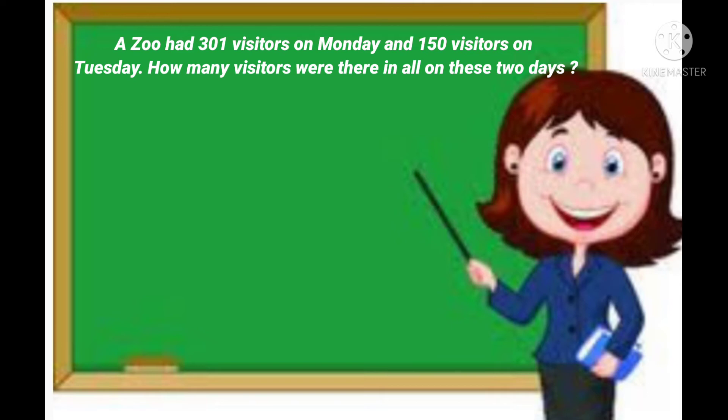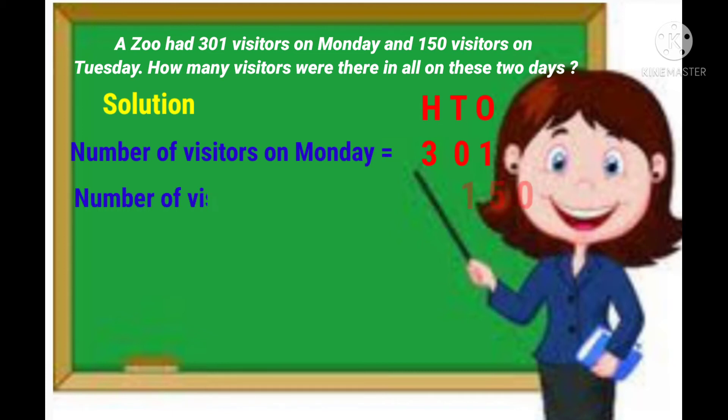Children, we have to find how many visitors were there in all on these two days. So, we have to do addition. First we will write number of visitors on Monday is equal to 301. In second line, number of visitors on Tuesday is equal to 150. Let's find the total.